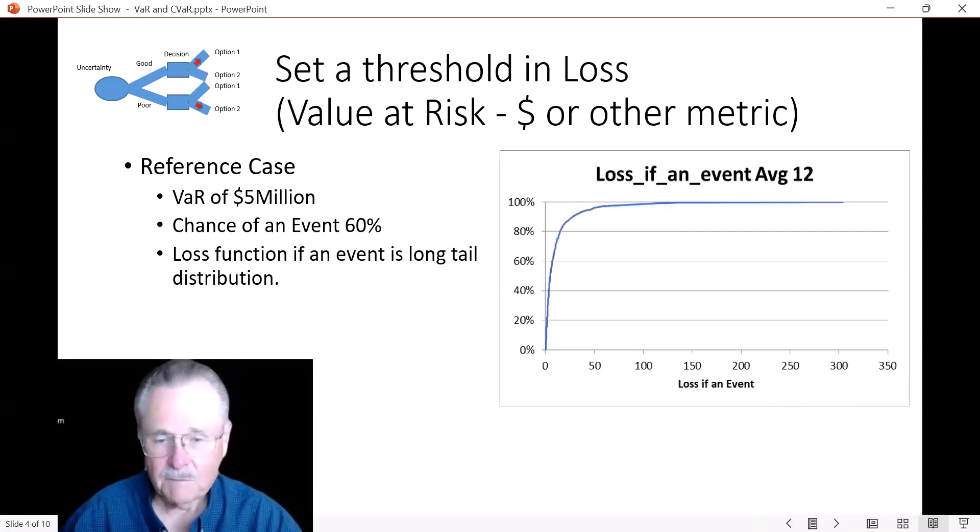So if an event occurs, let's assume that this is the loss function. It's really a kind of a log normal sort of thing. And so you can see it's got a big, big, big long tail. You can think of this as an earthquake or something along those lines.